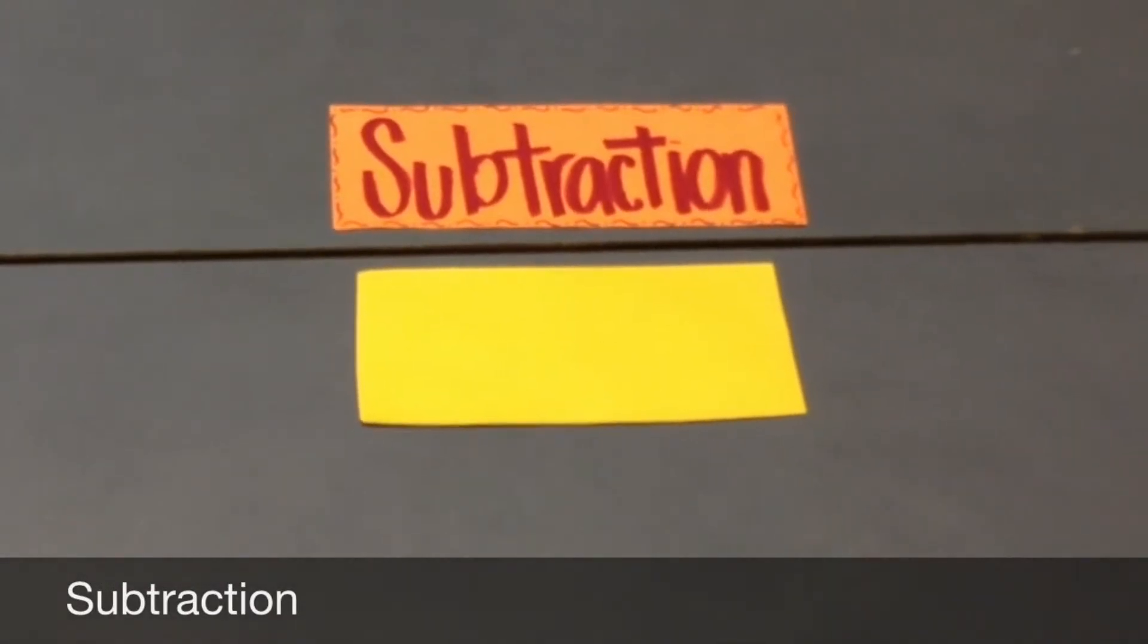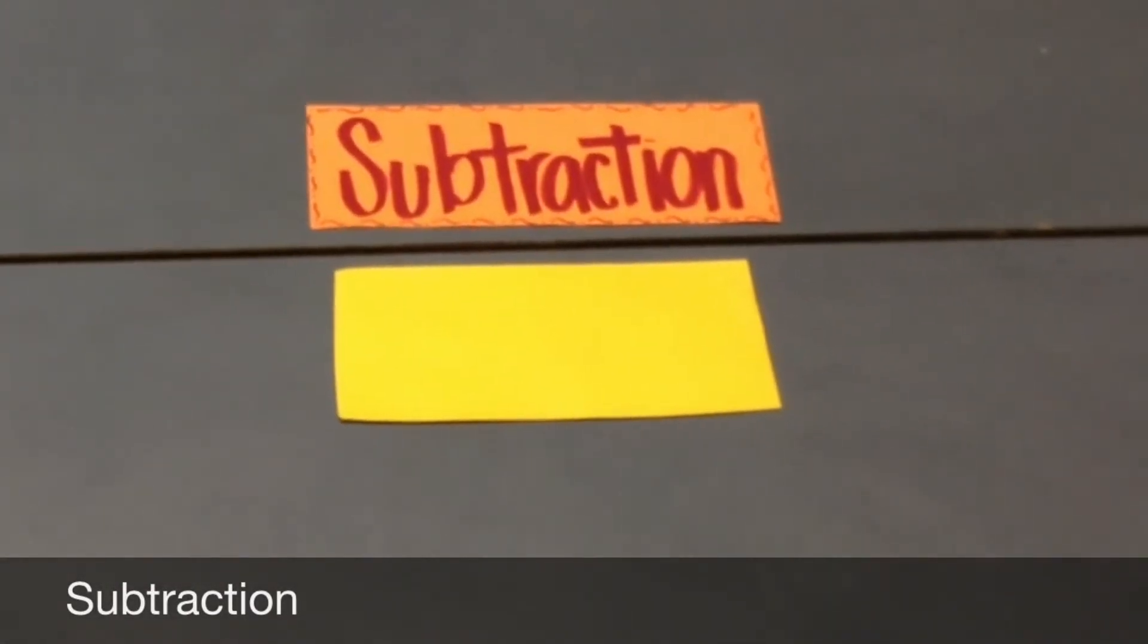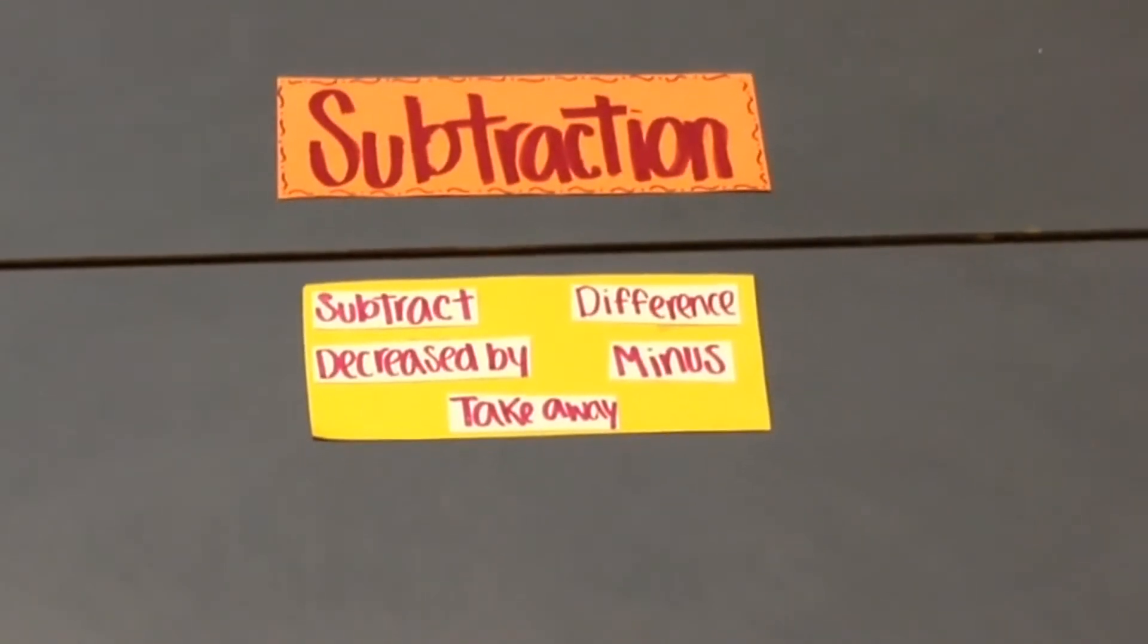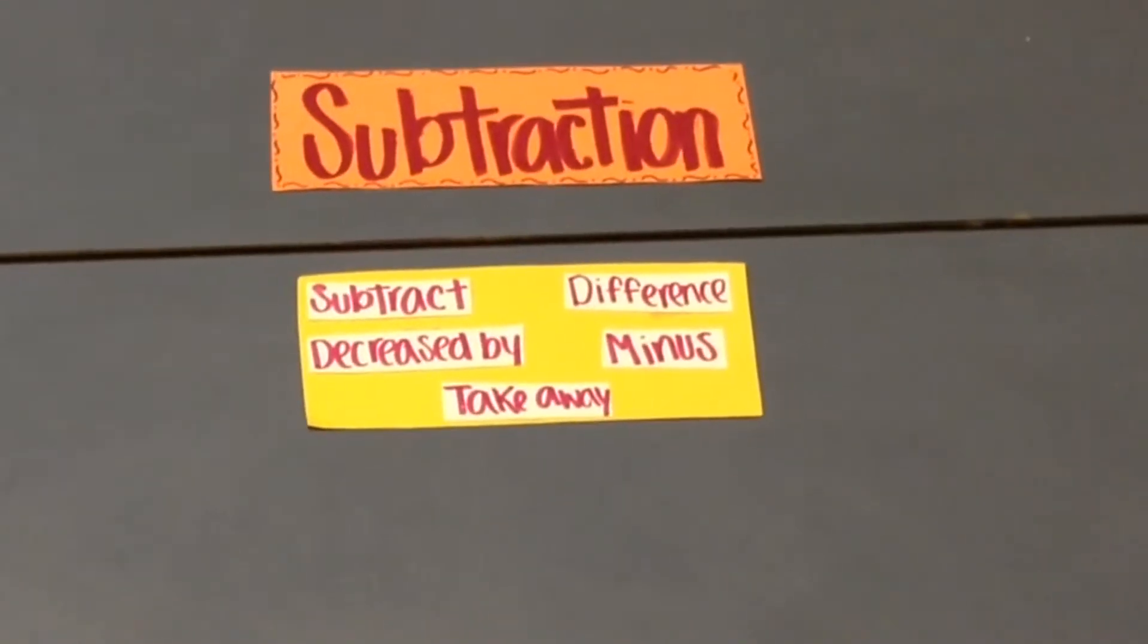Subtraction. This, that, in the yellow is the symbol for subtraction. The keywords for subtraction are subtract, decrease, buy, take away, difference, and minus.